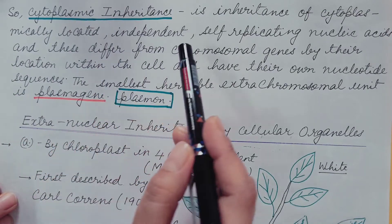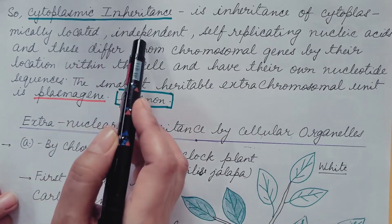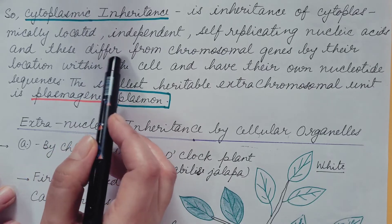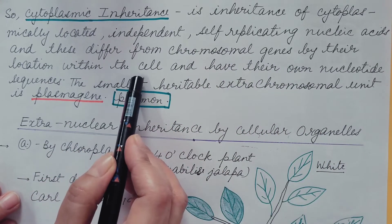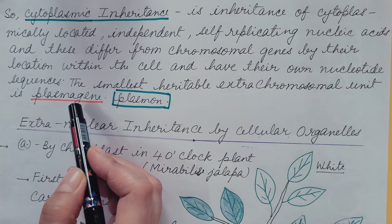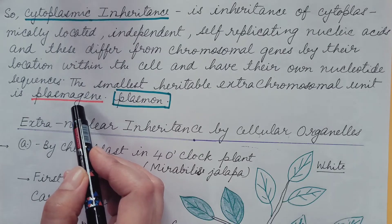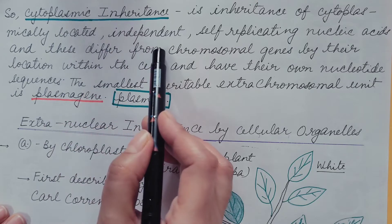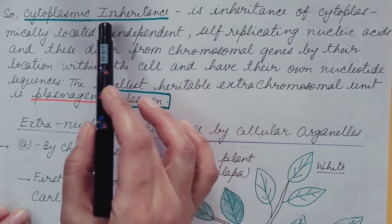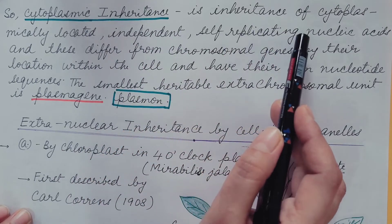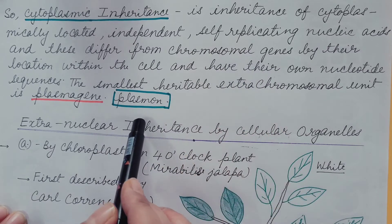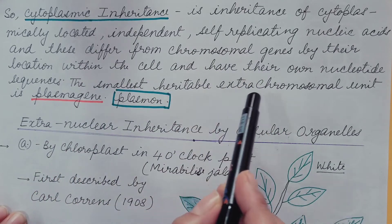Cytoplasmic inheritance is defined as the inheritance of cytoplasmically located, independent, self-replicating nucleic acids. These differ from chromosomal genes by their location within the cell and have their own nucleotide sequences. The smallest heritable extrachromosomal unit is known as a plasmagene, and all of the plasmagenes of the cell together constitute the plasmon. The cytoplasmic genes are independent, self-replicating nucleic acids located in the cytoplasm rather than the nucleus.